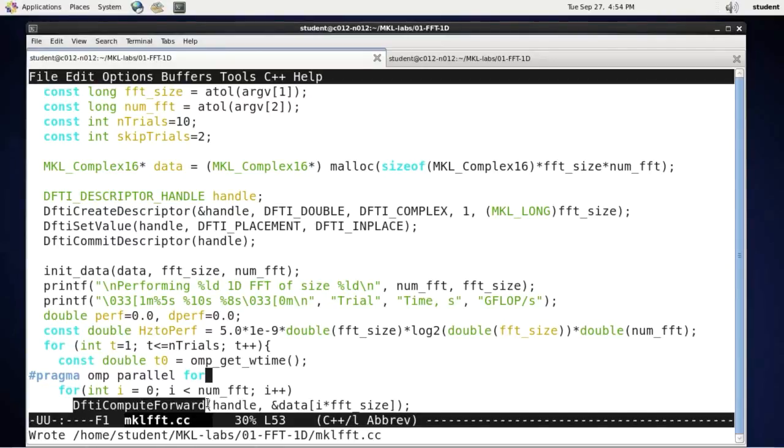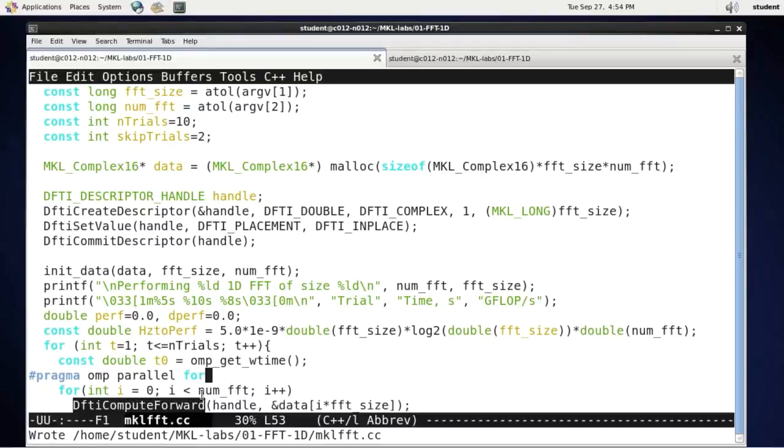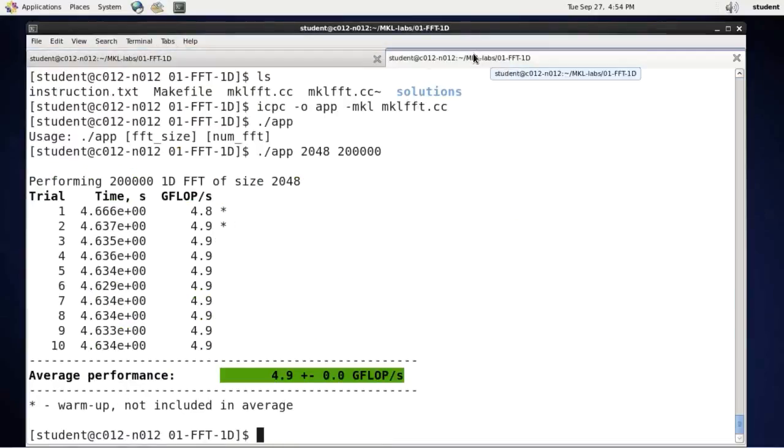By default, nested parallelism is forbidden in OpenMP. So automatically, I will have single-threaded implementations of MKL fast Fourier transforms inside this loop. So I just made one change and let's see what that did.